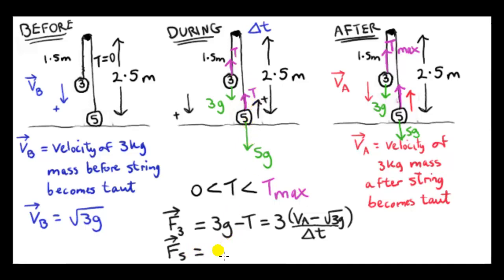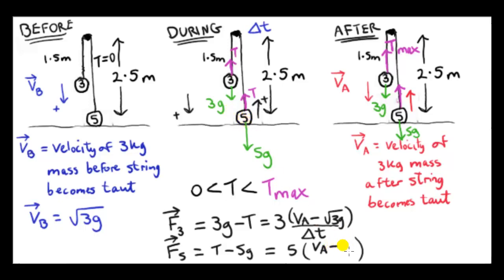Now for the 5 kg mass, with upwards as positive: +T − 5g = 5 × (VA − 0) / delta T. The final velocity of the 5 kg mass equals VA (same as the 3 kg mass, by the inextensible string), and its initial velocity is zero since it was at rest. The time interval delta T is the same for both particles since they're connected.